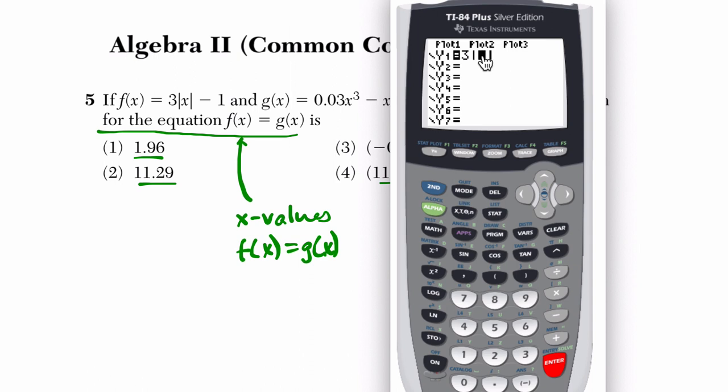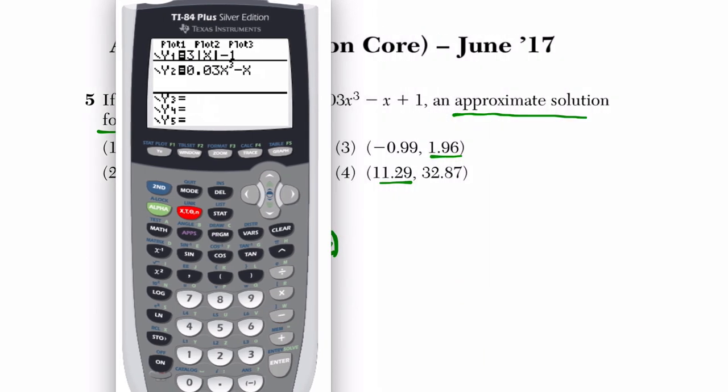And I get the little brackets here, you might not get those, you might say abs or something. But the idea is now I have absolute value, I'm going to go into my cubic function, 0.03 x cubed minus x, what else, plus one.